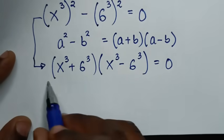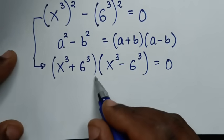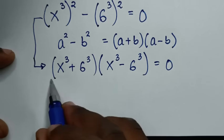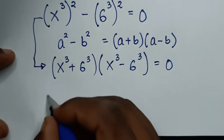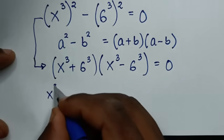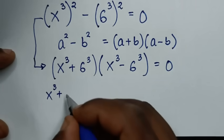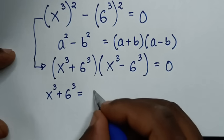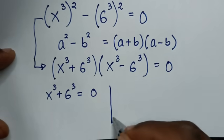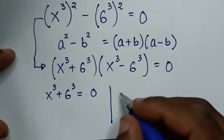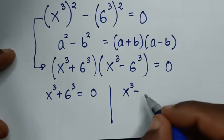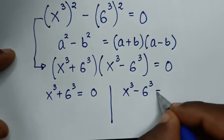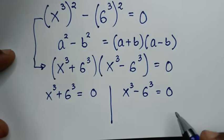Then from here we have two solutions: the first solution is x to the power of 3 plus 6 to the power of 3 is equal to 0, and the second solution is x to the power of 3 minus 6 to the power of 3 is equal to 0.